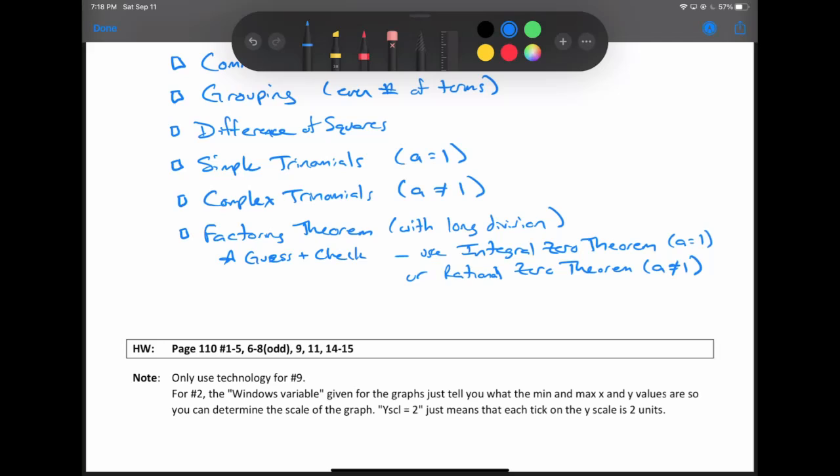A couple little notes there. Only use technology for number nine. Don't cheat and use Desmos to solve everything because Desmos can solve many things or Mathways can solve most things. You actually have to learn how the methods work. And for question number two, the textbook uses little boxes and gives some details in it. Most of it is pretty obvious except for this notation right here. And all that means is in the picture, the Y scale is equal to two. So each tick mark you see on the graph represents two units.